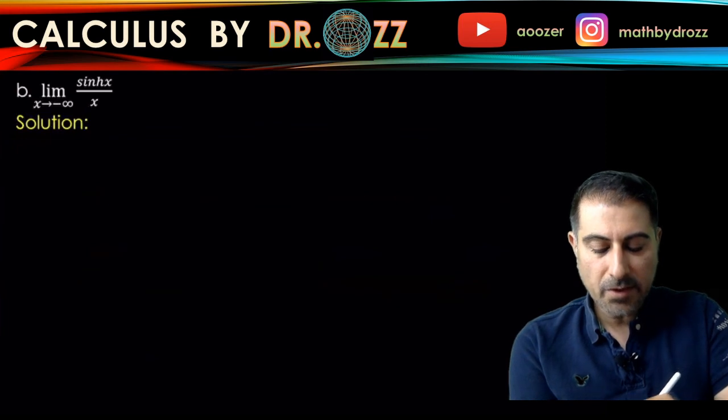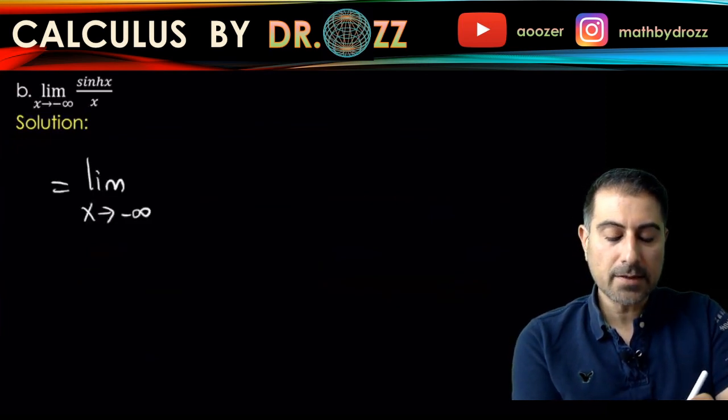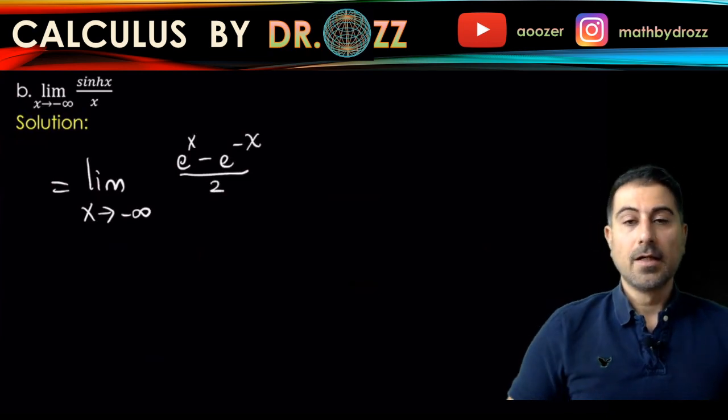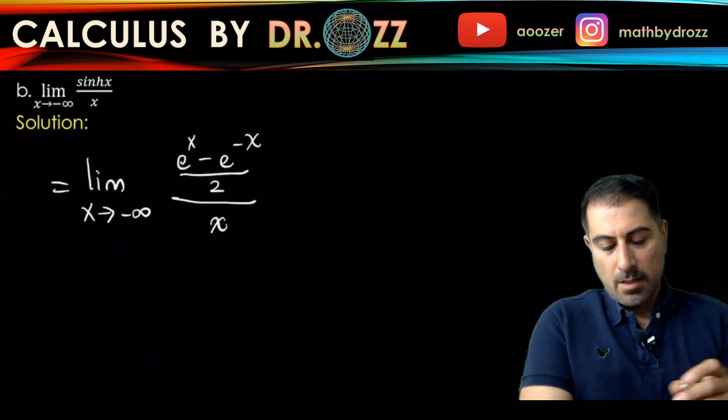So this limit is equal to e to the x minus e to the minus x over 2—that's the definition of sine hyperbolic x—all divided by x. You can pretend like you have a rational function.